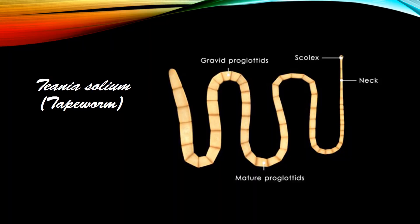With the help of this diagram we will discuss the morphology of Taenia solium so that we can understand its life cycle better. Here is the scolex of Taenia solium, which has suckers and hooks with the help of which it gets firmly attached to the intestinal wall. Newly formed body segments are immature — male and female sex organs are not yet developed in these immature body segments. As these body segments move towards the posterior end, the sex organs develop.